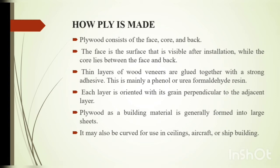Then we should know how plywood is made. Plywood consists of face, core and back. The face is the surface that is visible after installation while the core lies between face and back. Thin layers of wood veneers are glued together with strong adhesive, mainly a phenol or urea formaldehyde resin. Each layer is oriented with its grain perpendicular to the adjacent layer.